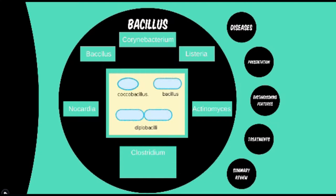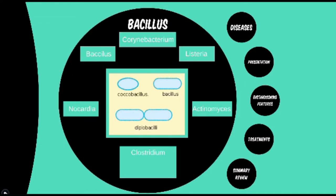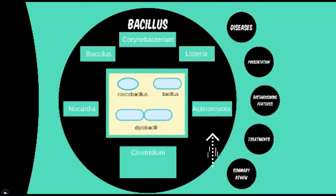In getting acquainted with the rod-shaped bacteria, there is more diffuse groupings by genus. We don't have the clusters and chains seen in cocci groupings, although there is a strange term that may pop up from time to time: coccobacillus. As the name would imply, these bacteria are not clearly rod-shaped or circular-shaped — they're somewhere in the middle. Two of the genera in this section are also classified as curved rods: corynebacterium and listeria. The actinomyces and nocardia are considered branching-shaped rods due to their groupings under the microscope.